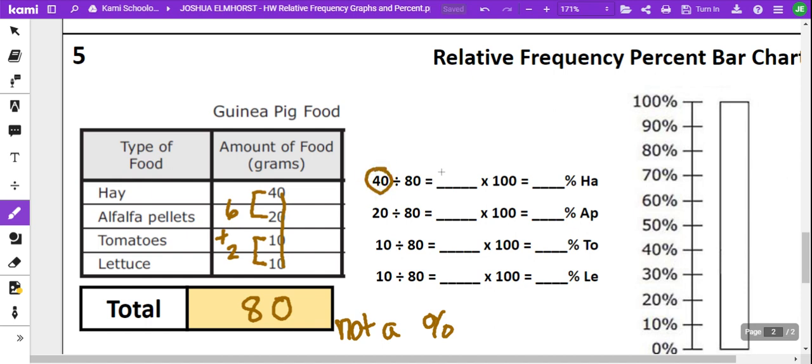So 40 divided by 80, 40 is half of 80, which is 0.5. 20 divided by 80 is going to be 0.25. 10 divided by 80, once we divide that out, is half of 25%, which is 12.5, and these are the same right here.